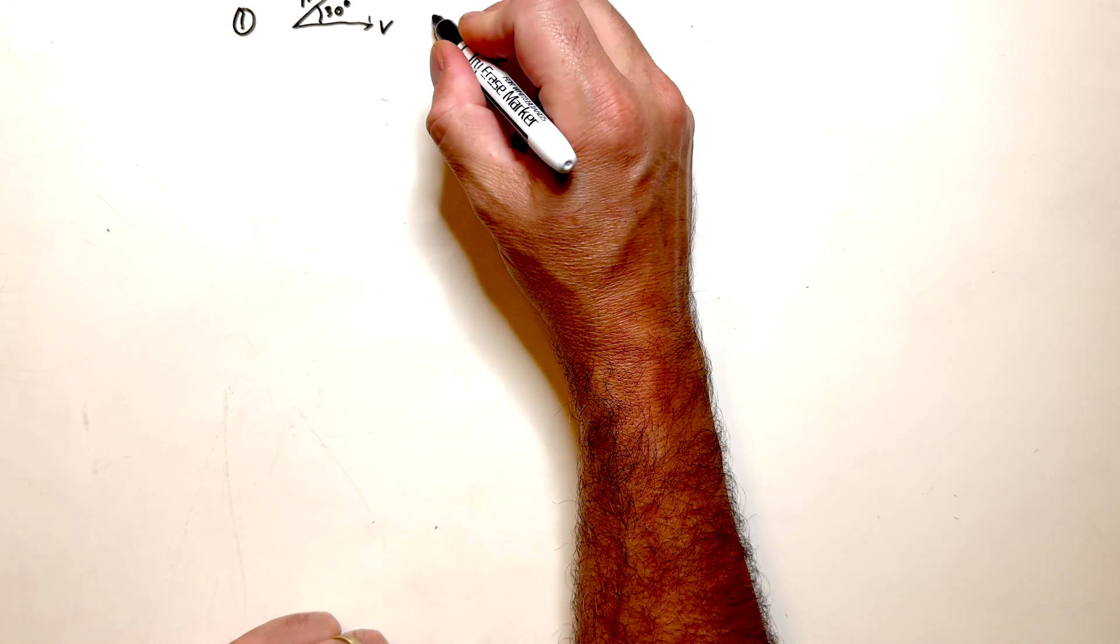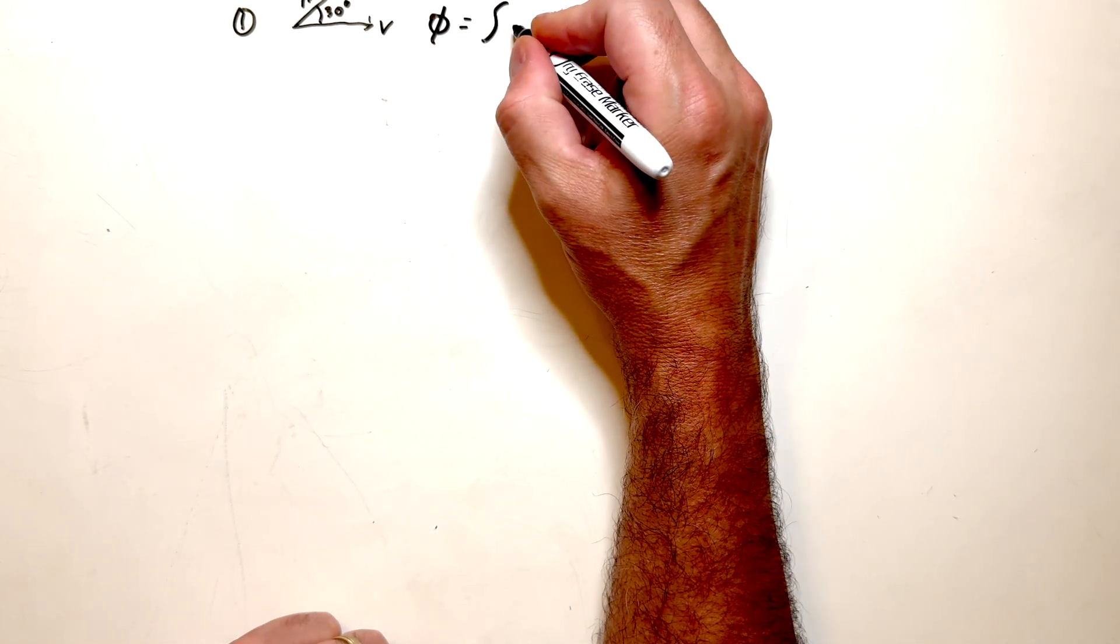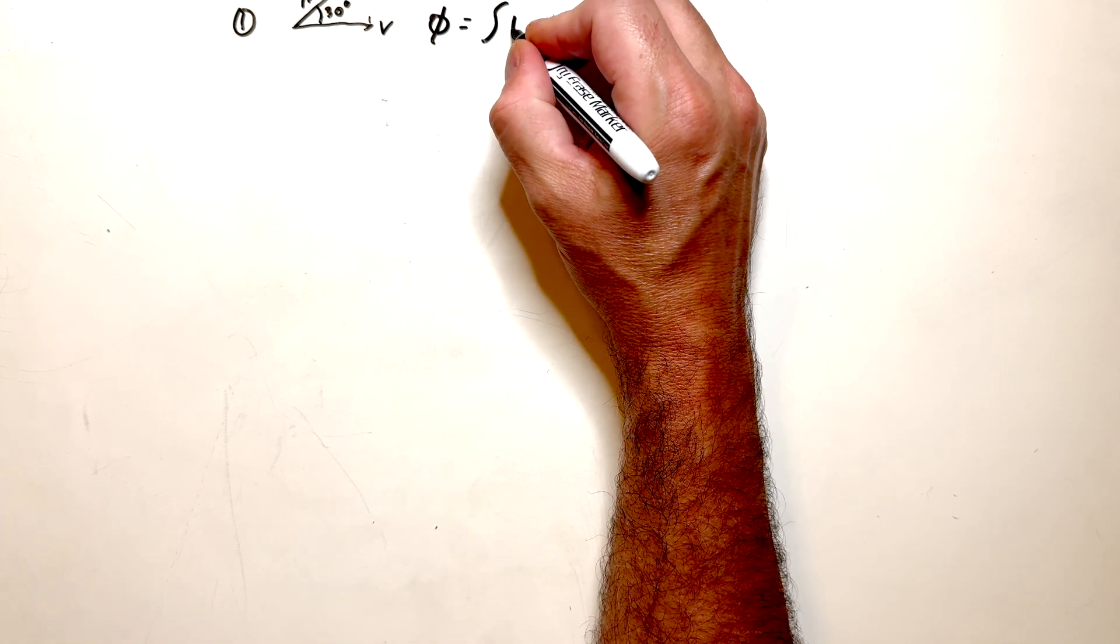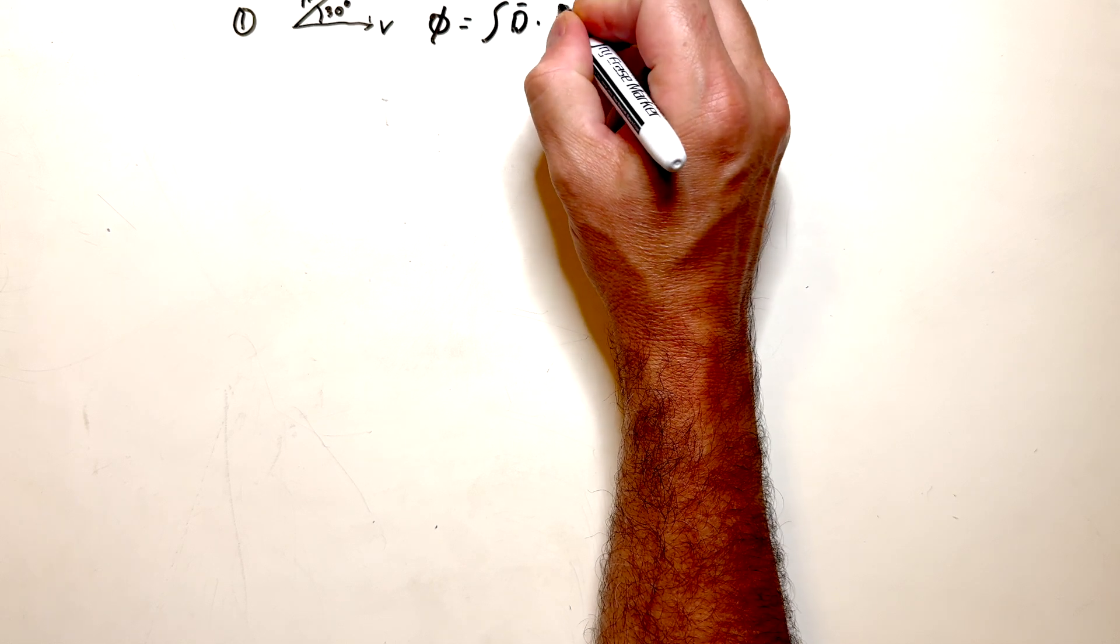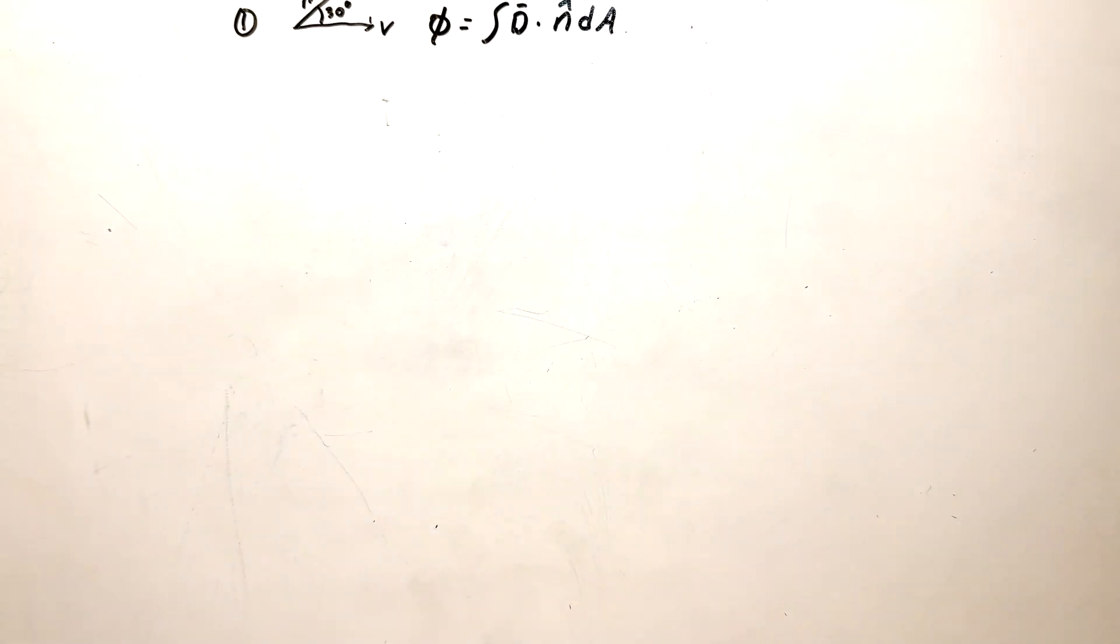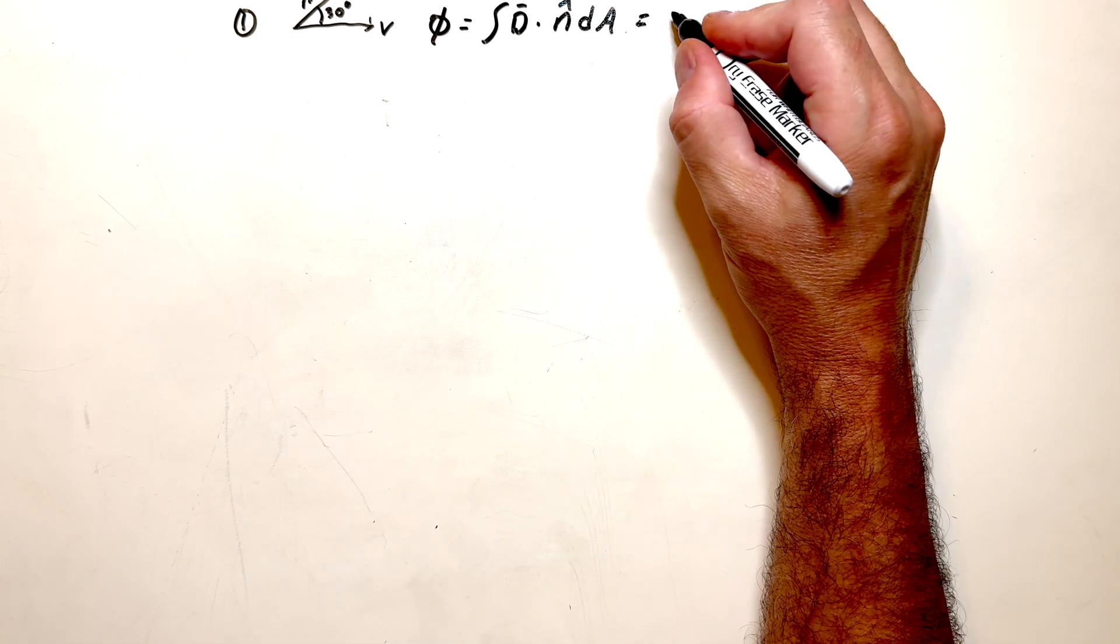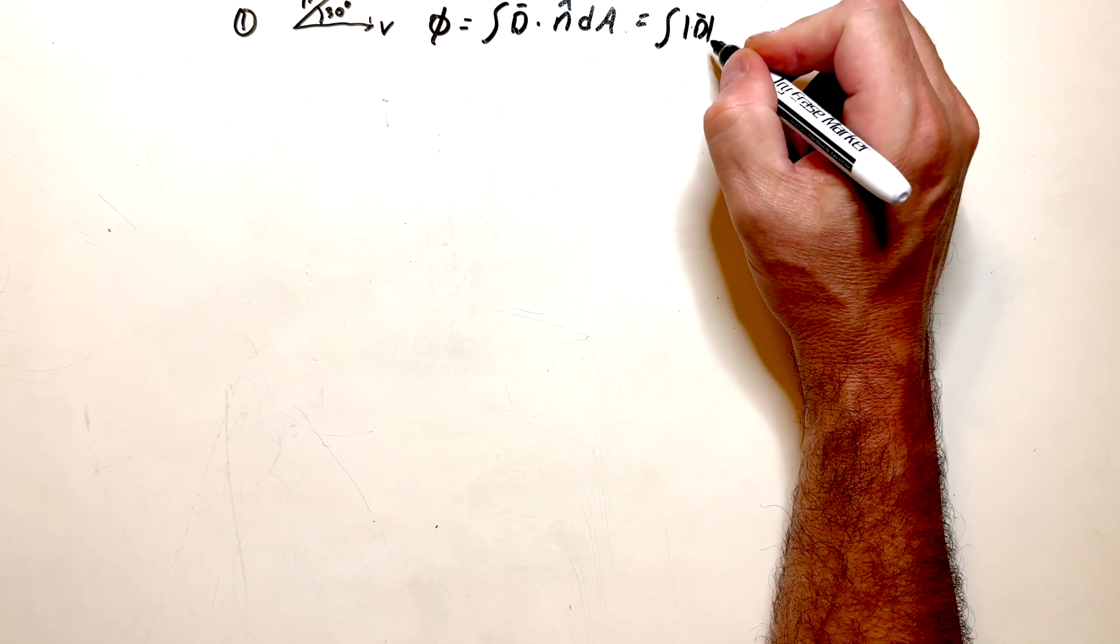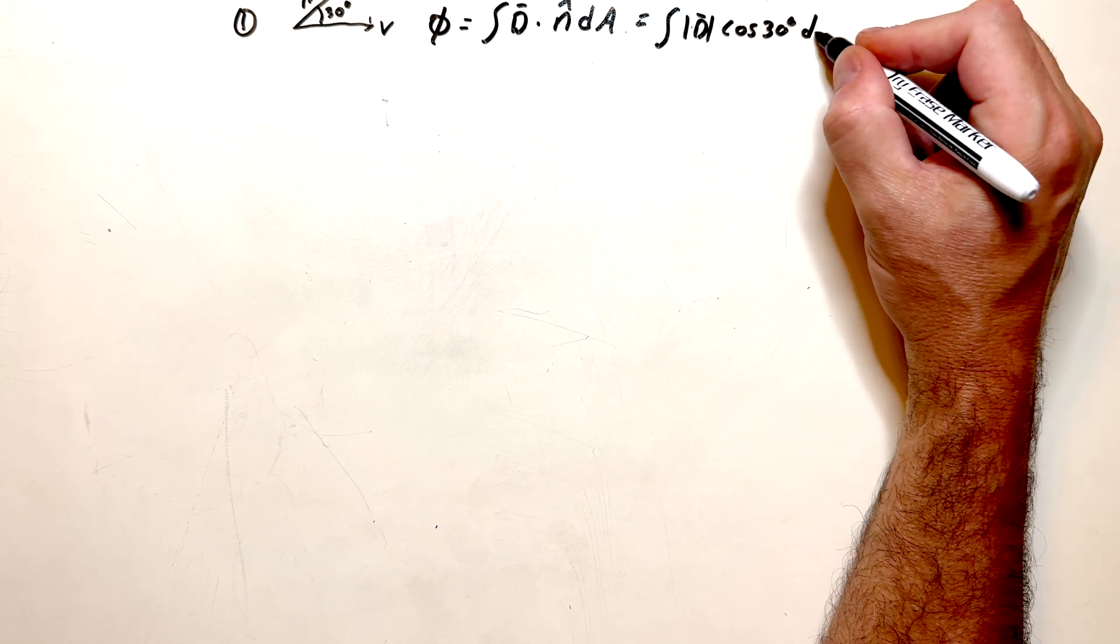So how do we calculate this? Well, phi is equal to the integral, I'll call the money velocity D for dollars, dotted with that normal, dA. So integrate the area. And that is going to be equal to the integral of the magnitude of D times the cosine of 30 degrees dA.